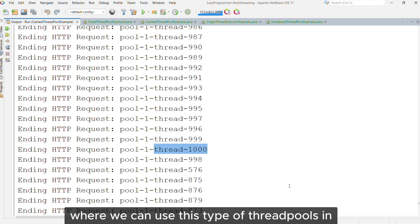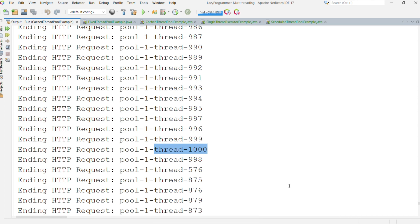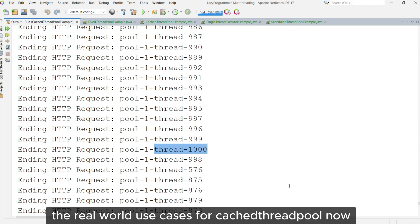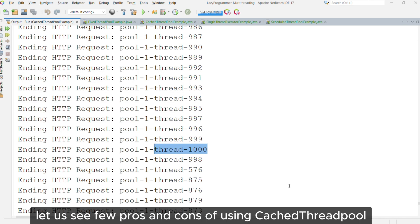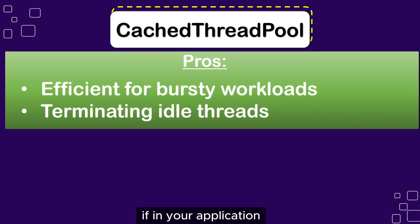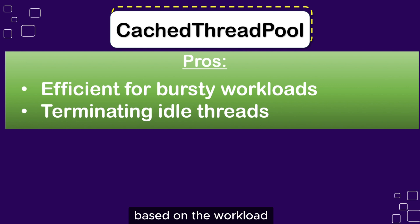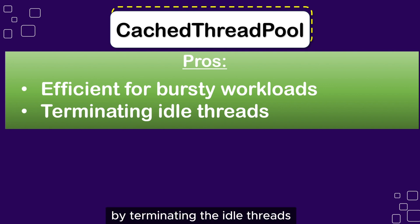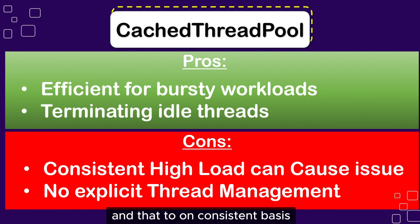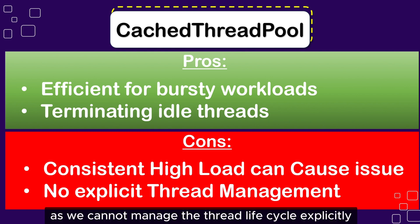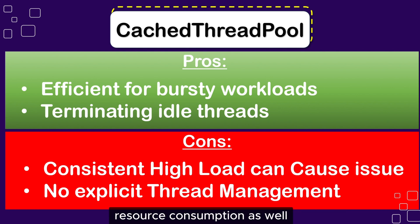Now here is a question for you: where can we use this type of thread pool in real-life scenarios? Comment in the section below the real-world use cases for Cached Thread Pool. Now let us see a few pros and cons. If your application only has sudden bursts of load, then using a Cached Thread Pool can help in adjusting the number of threads based on workload, which can be efficient for bursty workloads. It also avoids resource wastage by terminating idle threads. Under cons, if your application experiences very high load for a very long and consistent period, it may create too many threads and potentially cause resource contention, leading to uncontrolled resource consumption.